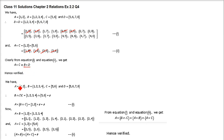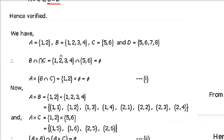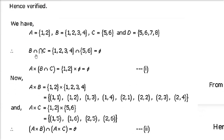The next one is to verify A cross (B intersection C) = (A cross B) intersection (A cross C). All sets are as given. First find B intersection C: B is {1,2,3,4} and C is {5,6}. Nothing is common between them, so B intersection C = empty. When we cross A with empty, the Cartesian product with empty is always empty.